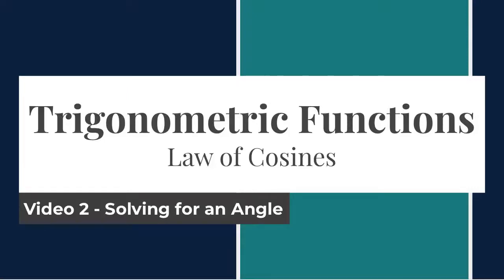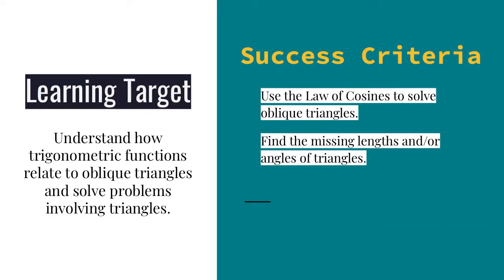Hello everyone. Let's continue our discussion on trigonometric functions and look at video number two for laws of cosines. In video one we were solving for a side, and in video two we're going to solve for an angle. Our learning target is understanding how trigonometric functions relate to oblique triangles and solve some of those problems. To be successful, we're going to use the law of cosine formula and find those missing angles of a triangle.